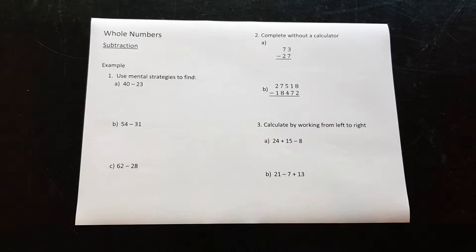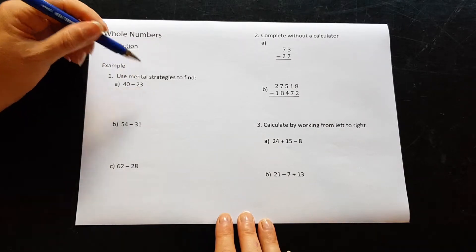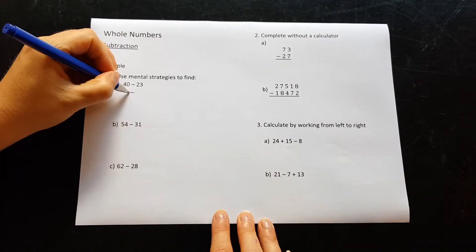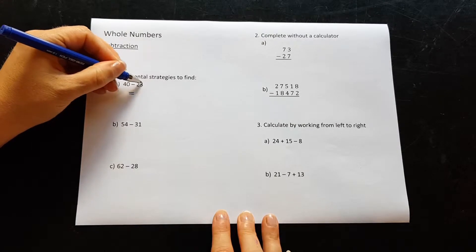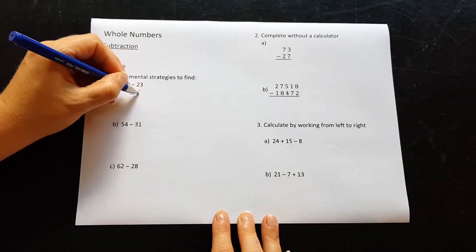In question one in the examples here it says use mental strategies to find 40 take away 23. What we can do is break the number that we're taking down into two numbers.